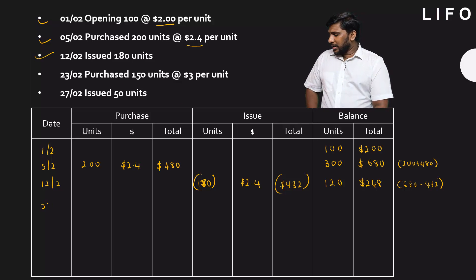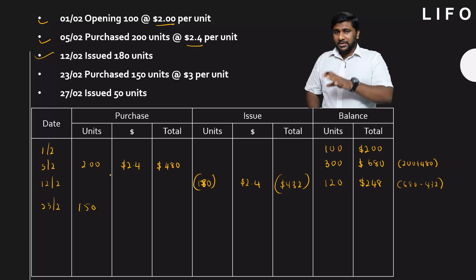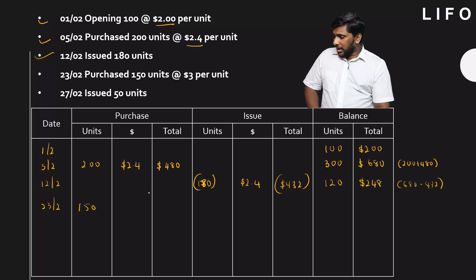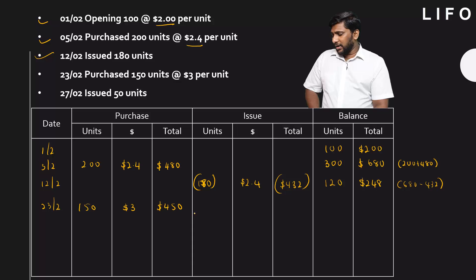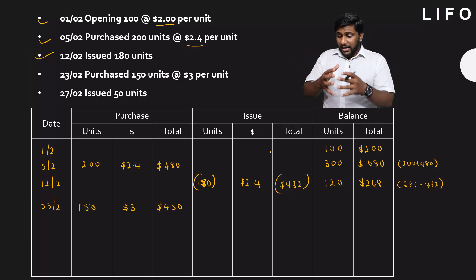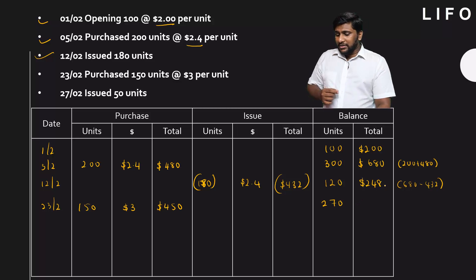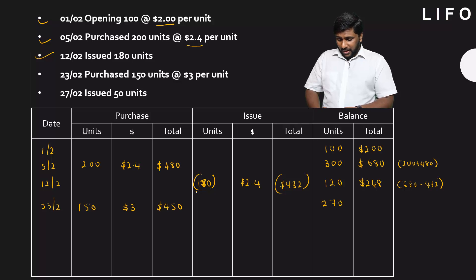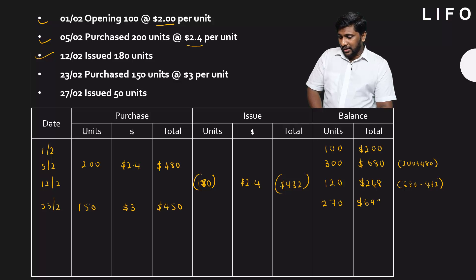On 23rd February, you are purchasing 150 units at $3 each, total cost $450. Whatever the purchase is recorded in the purchase column. Before the purchase you had 120 units. Now purchasing 150 more gives 270 units altogether. The inventory value before purchase was $248; adding $450 gives a new value of $698.